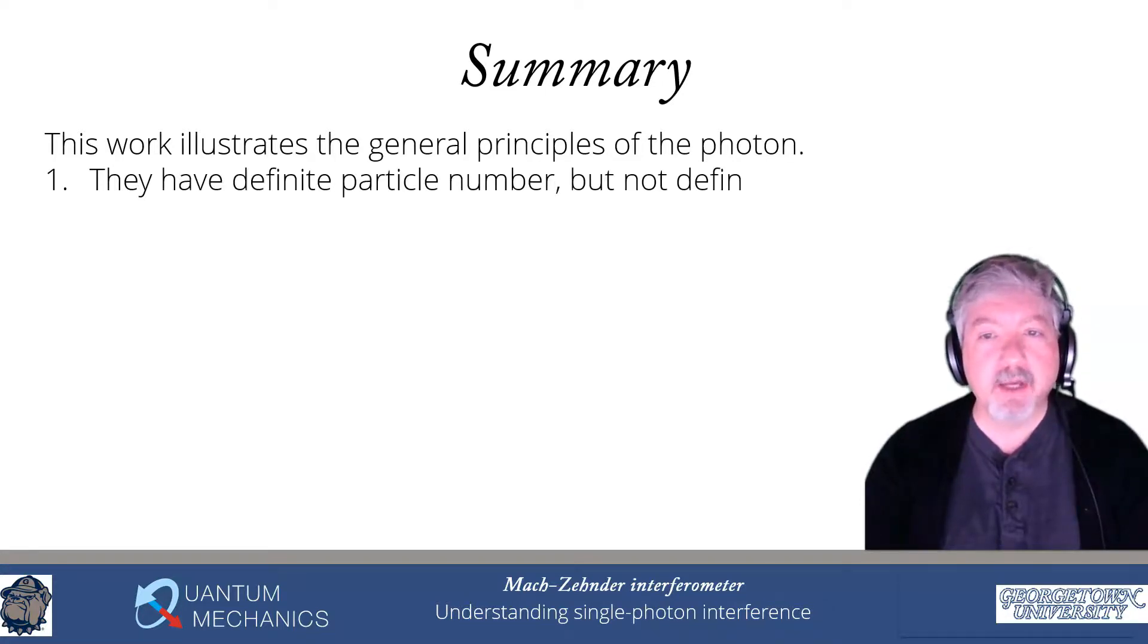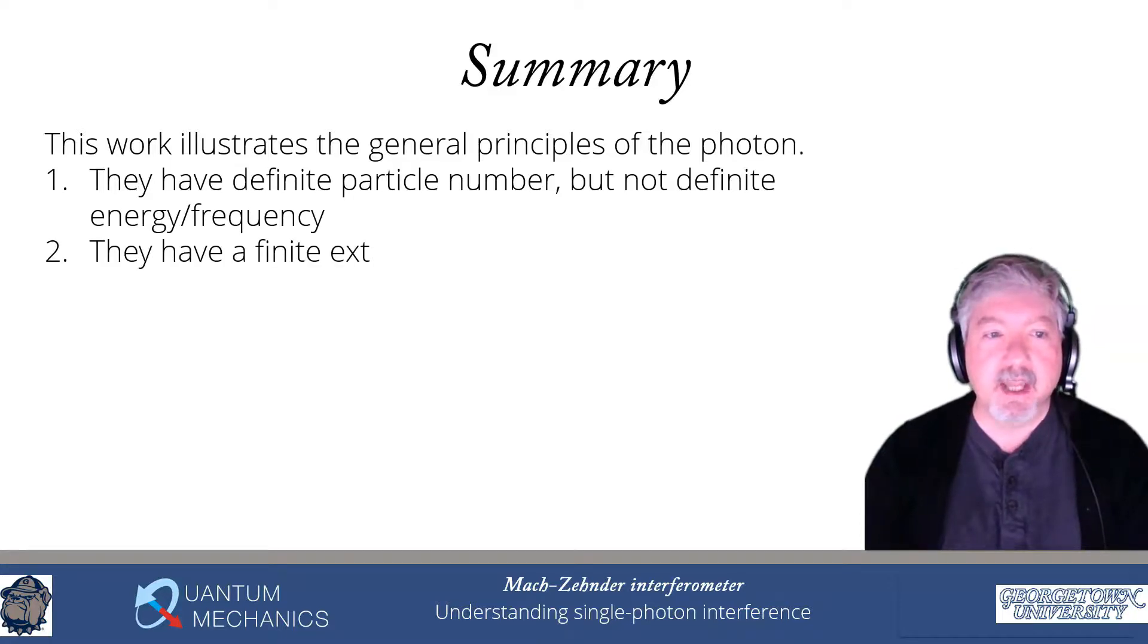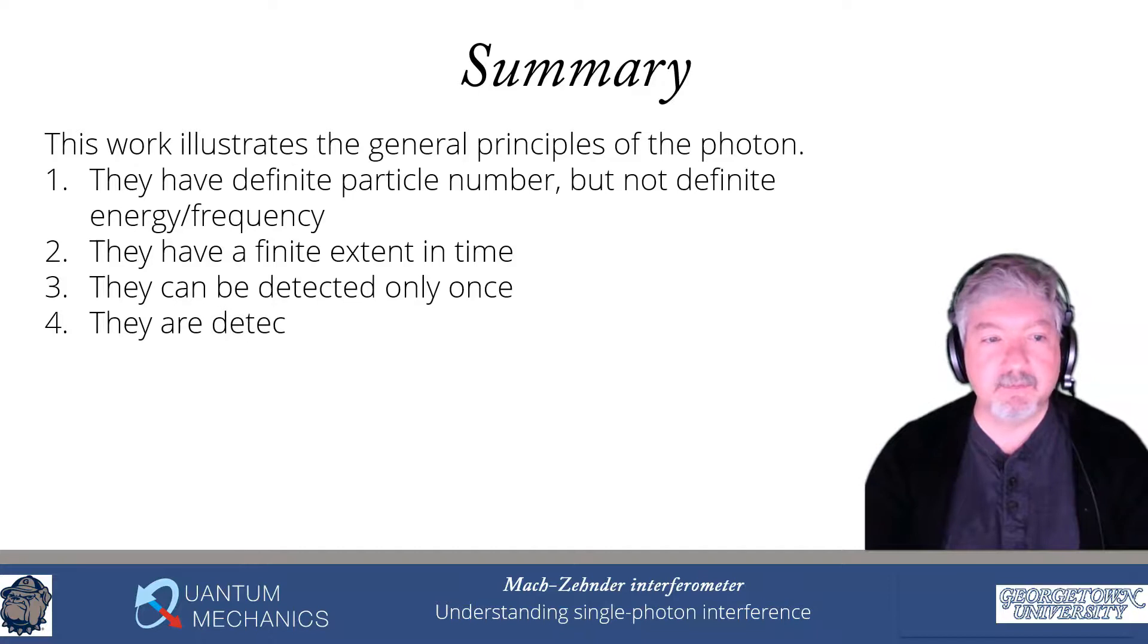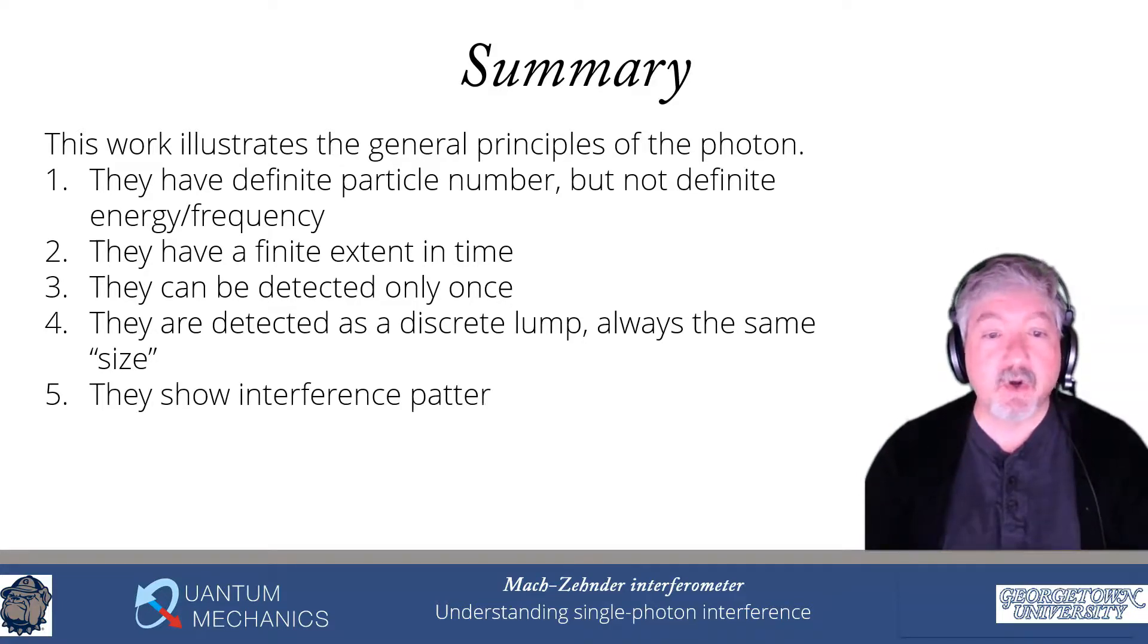These two experiments are illustrating the general principles of a photon. Photons have a definite particle number, but they do not have a definite energy or definite frequency. They have a finite extent in time. This is given by the extent or the width of the wave packet that is describing the photon. They can be detected only once, and then they're gone and destroyed. They are detected as discrete lumps, and they always have the same size. Every photon has the same size in a photomultiplier tube.